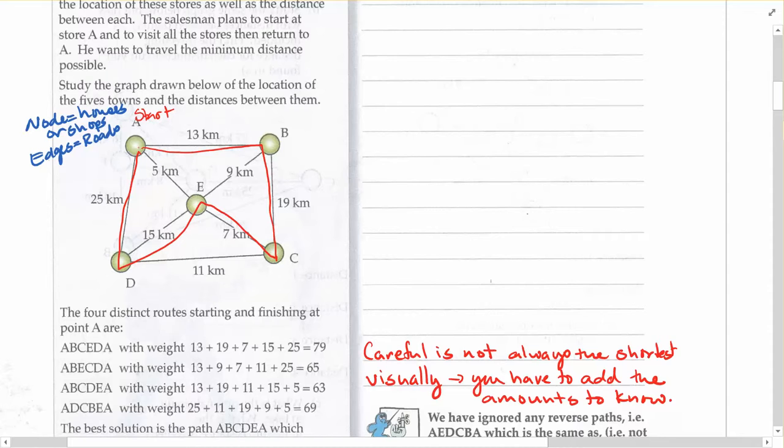To calculate our distances, we need to calculate by adding up all those different edges. So it's 13 plus 19 plus 7 plus 15 plus 25 equals 79 kilometers.